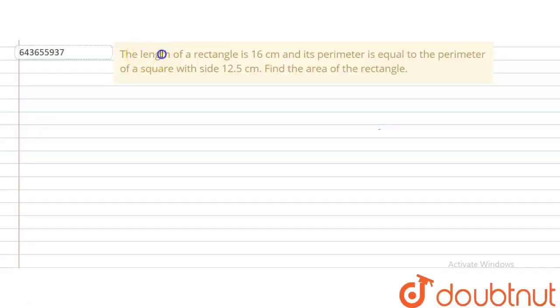Hello student, this is the problem. The length of a rectangle is 16 cm and its perimeter is equal to the perimeter of a square with side 12.5 cm.